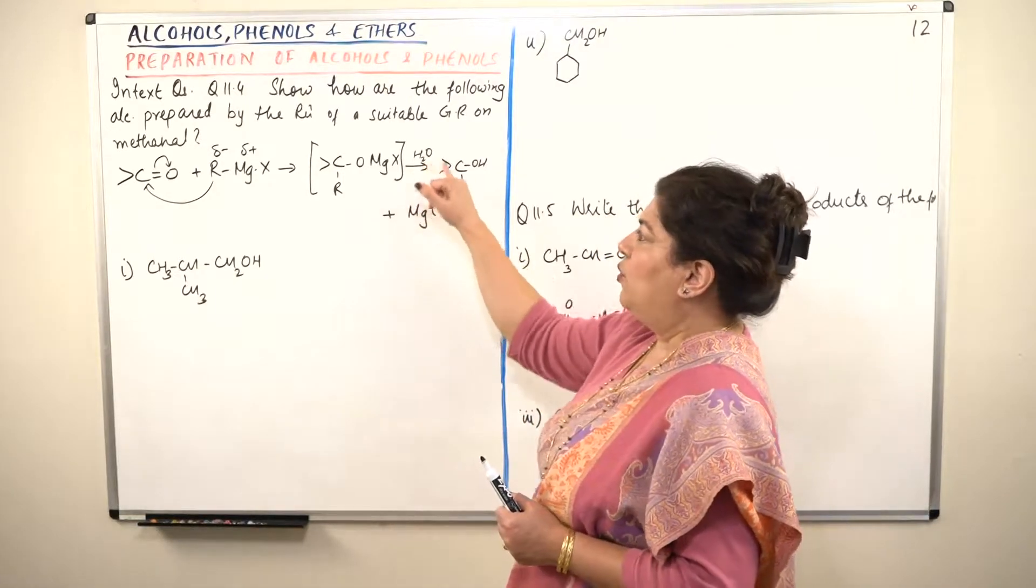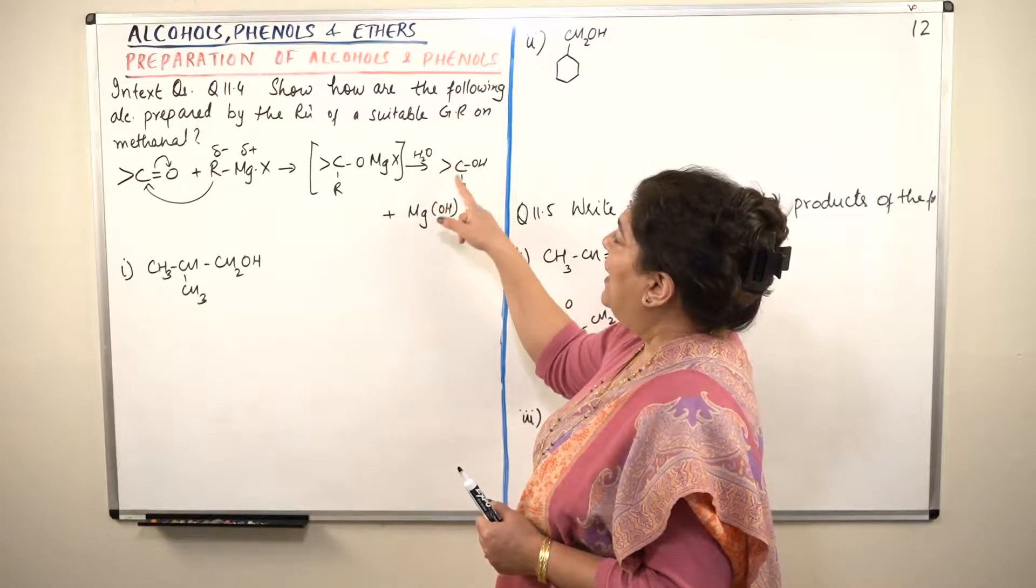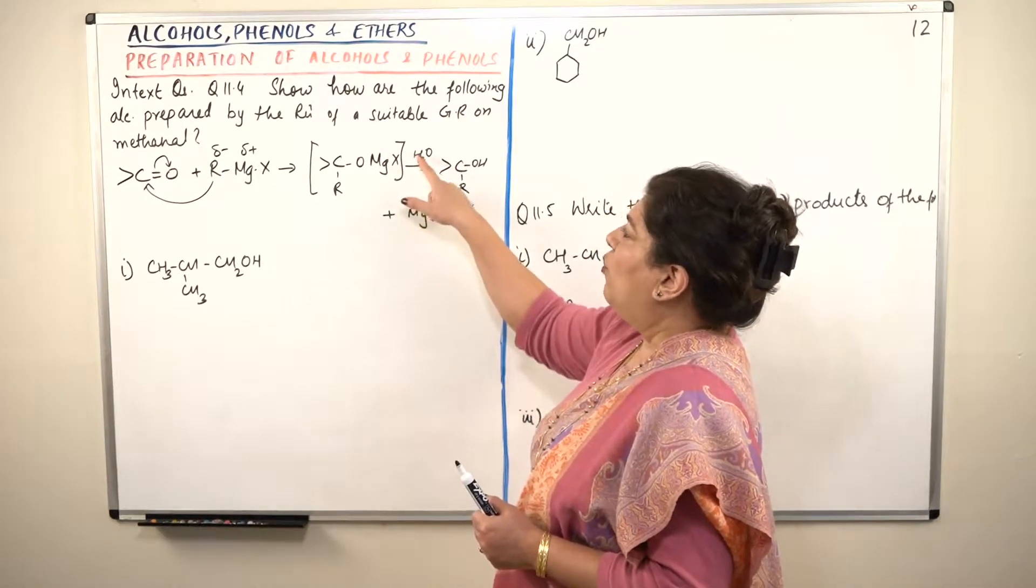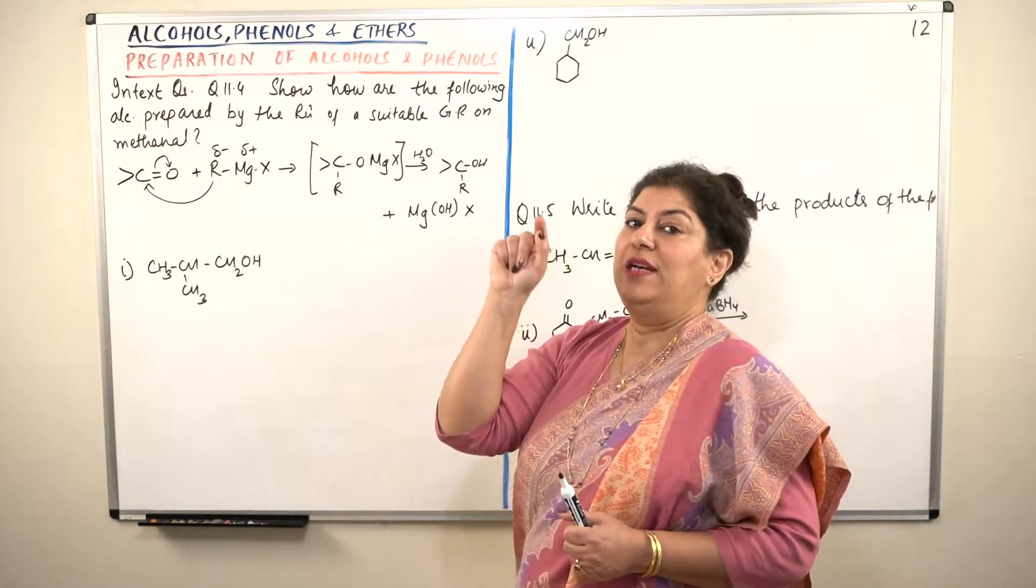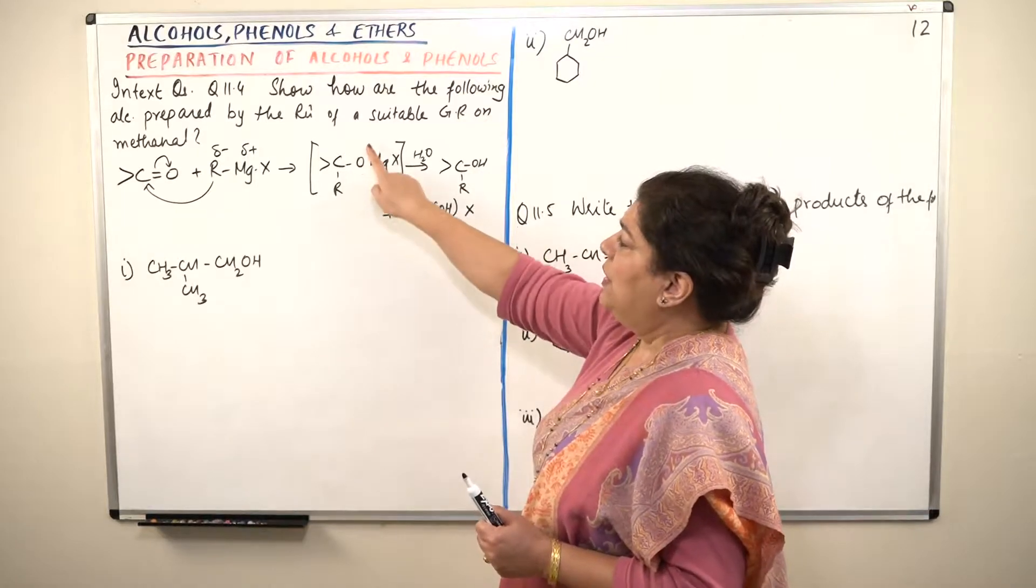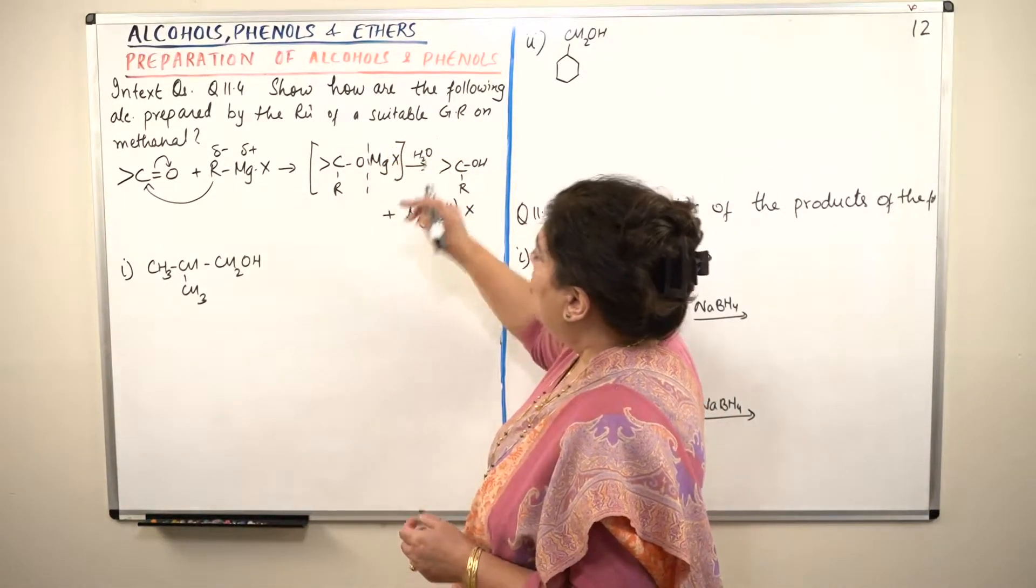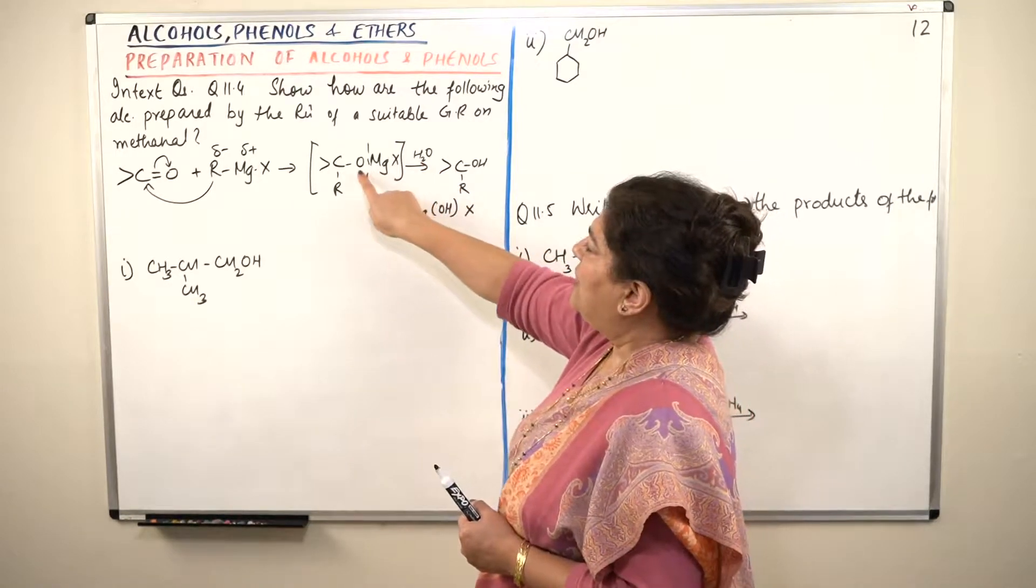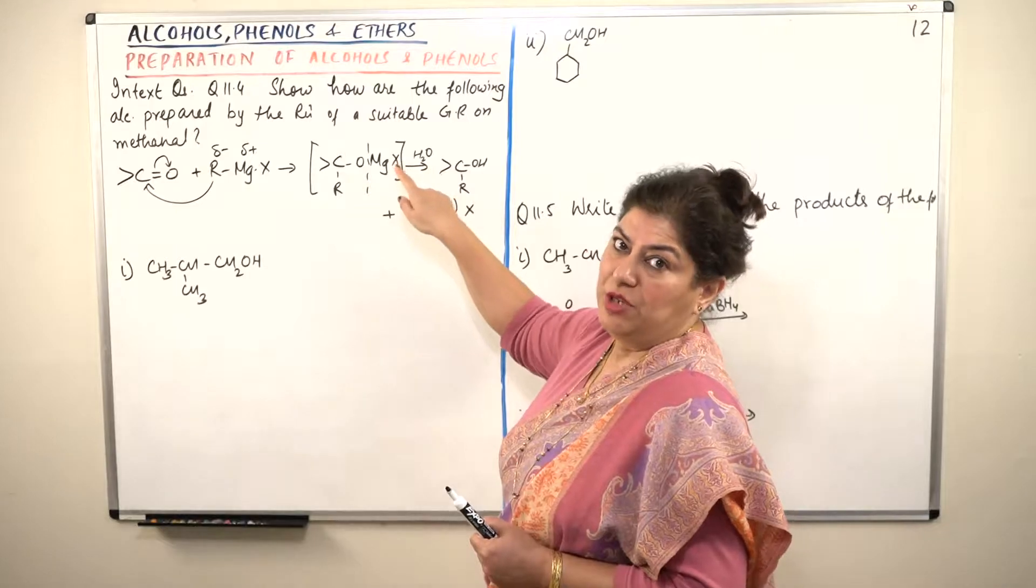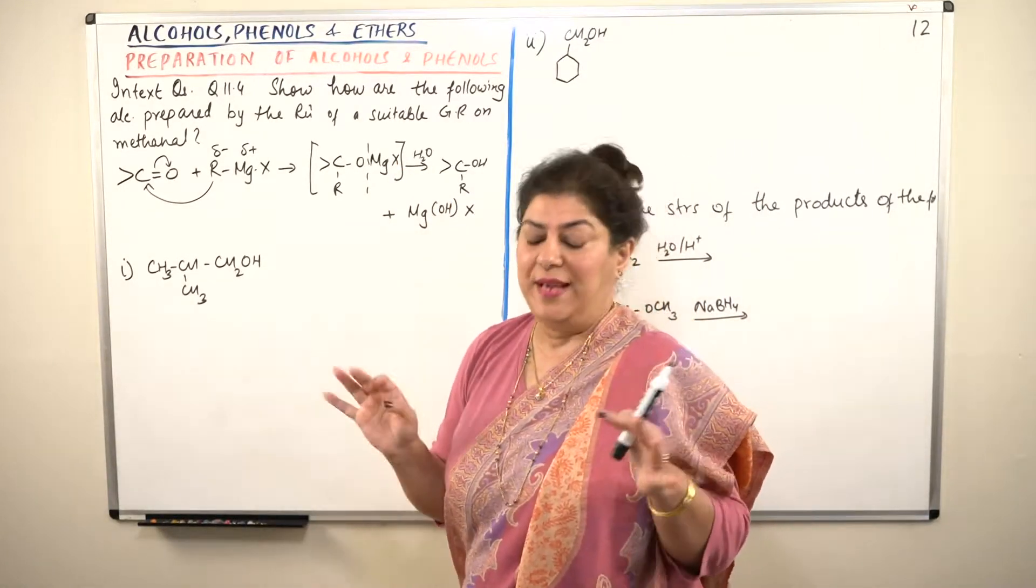So you'll get an adduct. The adduct will be such that the R will attach to carbon and O-Mg-X at oxygen. The Mg-X will get connected at oxygen. Now hydrolysis occurs with water. The molecule breaks down and it breaks down in such a way that the Mg-X part separates out. Water is divided into H and OH, the H part attaches itself to oxygen and the OH part attaches itself to the Mg-X. So it becomes Mg-OH-X. This is the basic reaction that is occurring.